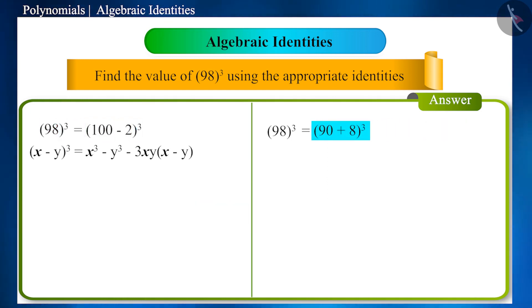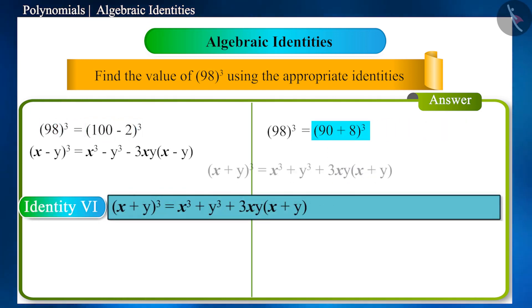And for 90 plus 8 to the power of 3, we will have to use the identity x plus y to the power of 3.